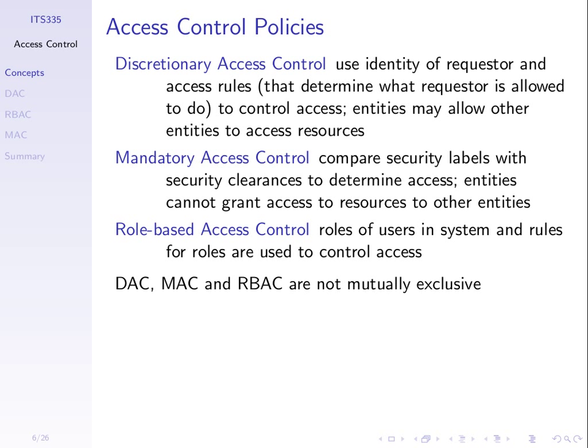Discretionary access control is based on the identity of a user requesting to access some resource and a set of rules that determine which user can access which resources. Discretionary means that users are allowed to modify who can access particular resources — they have some discretion in changing these rules. Users may allow other users to access their resources. For example, if I have my own file on the computer system, I may be able to grant someone else permission to read that file.